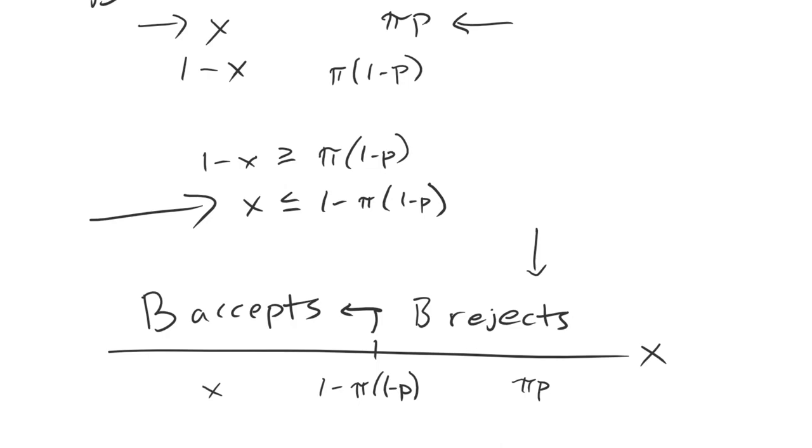So the question then is going to be what acceptable demand is A going to make? What optimizes that acceptable demand? And why is that optimal acceptable demand better than getting this payoff of rejecting?